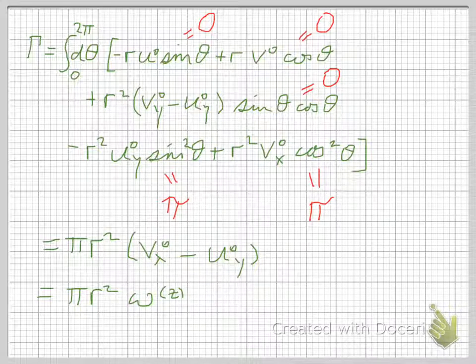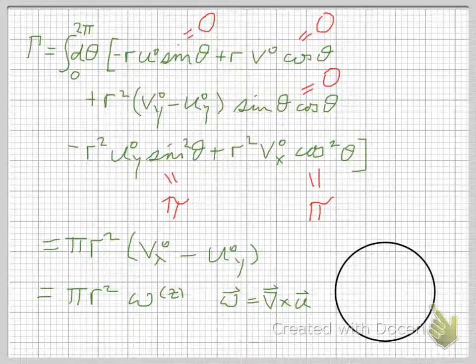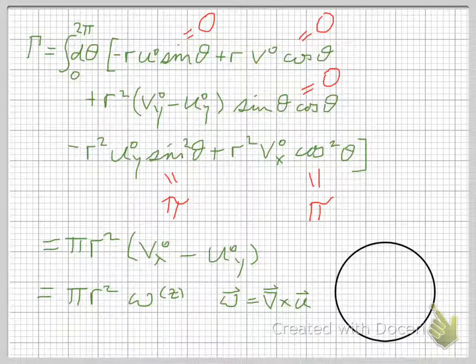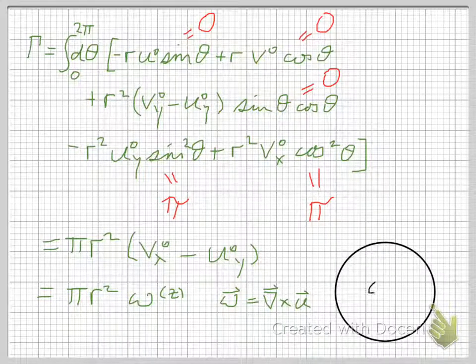So what we have here is an example of Stokes' theorem. We've integrated around the circle, like that, around that circle. And notice that what we get is pi r squared, which is the area of the circle, times the vorticity inside the circle.